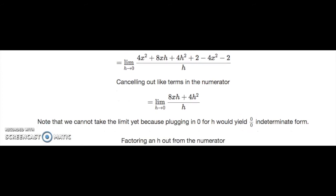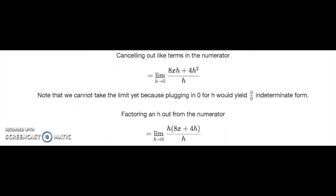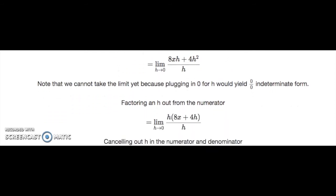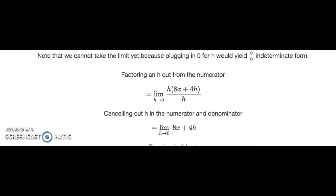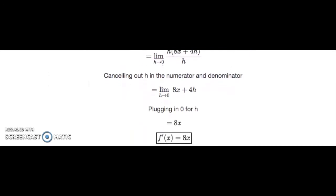We notice that we can factor an h out from the numerator. After doing this, we obtain the limit as h goes to 0 of h times (8x + 4h) all over h. Canceling the h's in the numerator and denominator gives the limit as h goes to 0 of 8x + 4h. Now we can safely plug in 0 for h, which leaves us with 8x. Thus, the derivative is equal to 8x.